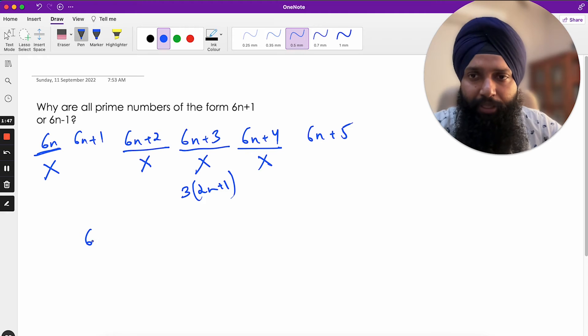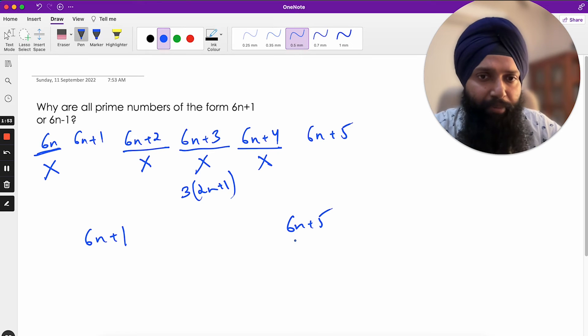Now if you think about it, we are left with just these two possibilities. Only these two numbers can be prime numbers. And this is essentially just one less than the next multiple of 6. 6n+6 would be a multiple of 6, so this is just 1 less than that. So in a way I can also write it as 6(n+1)-1, so basically a multiple of 6 minus 1. And this is a multiple of 6 plus 1.